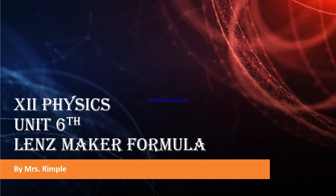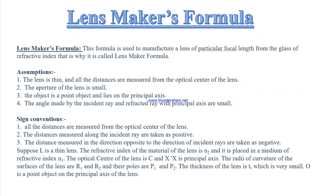Hello, welcome to my channel. Let's start Unit 6. Today's topic is the Lens Maker's Formula. This is a most important topic. This formula is used to manufacture a lens of particular focal length for a glass of refractive index. So the focal length formula is known as the lens maker's formula — similar to the lens formula and mirror formula.